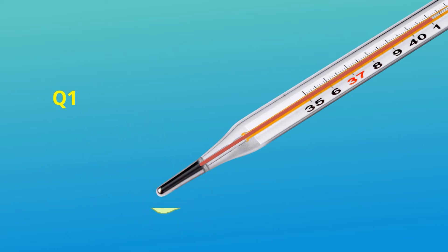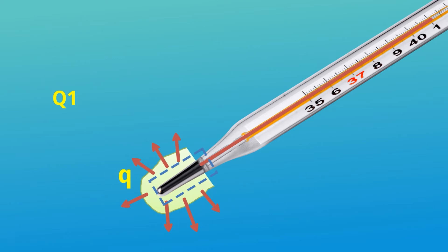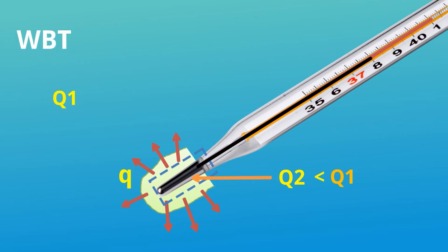Now if we put a wet cloth on the bulb, water will start to evaporate, and for the evaporation, latent heat of vaporization is taken from the bulb or the mercury — say the heat loss is Q. As there is a heat loss, this bulb will have less heat, say Q2, where Q2 is less than Q1 due to the loss of Q. This less heat will reduce the temperature reading in the thermometer, say to 38 degrees centigrade.